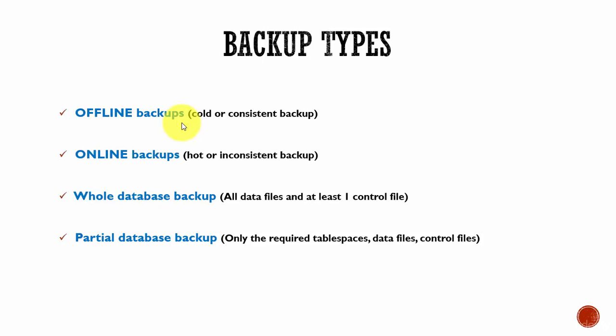These cold backups lead to a consistent backup. They are consistent because at the time of the backup, the system change number in the data file header matches the system change number in the control files. So, a cold or an offline backup is a consistent backup.